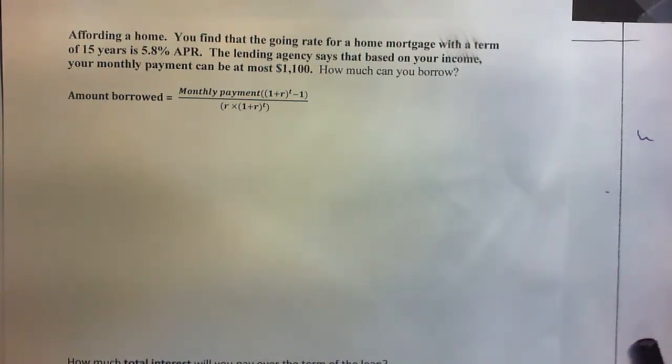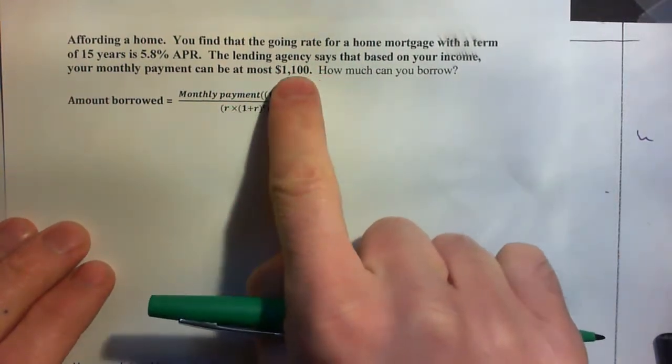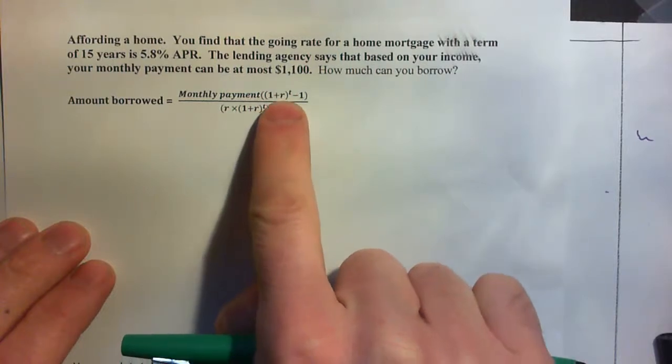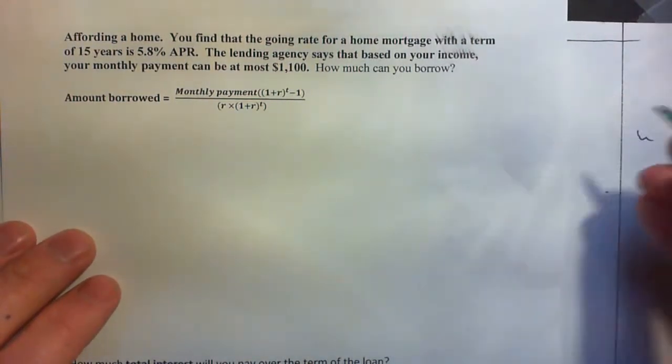This is our formula as you know, and into the formula we're going to put the monthly payment which is $1,100. We're going to put R which is the monthly interest rate and T which is the number of payments over the life of the loan. First of all we'll calculate R and T.